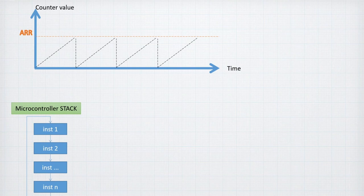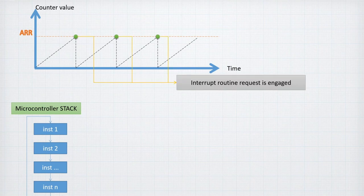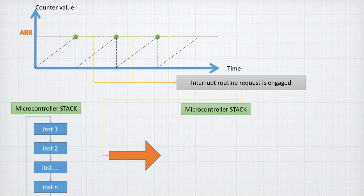Meanwhile, the microcontroller works normally within its stack, executing instructions one, two, three, up to the last instruction of our program. However, if we set up the microcontroller to work with interrupts, each time the counter reaches the ARR value, an interrupt is triggered and a request is engaged. This changes the program flow in a specific way.